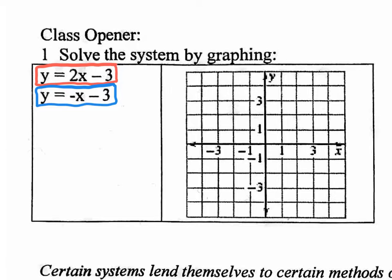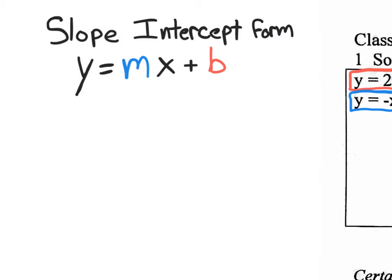This might be a good time to review basic graphing. The quickest way to graph an equation is if you have it in slope-intercept form. The word 'form' just means the way it looks. So if you have y by itself equals mx plus b — where m is just a number and b is just a number — then you'll be able to graph it quickly.